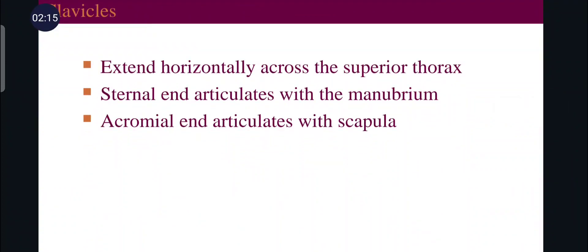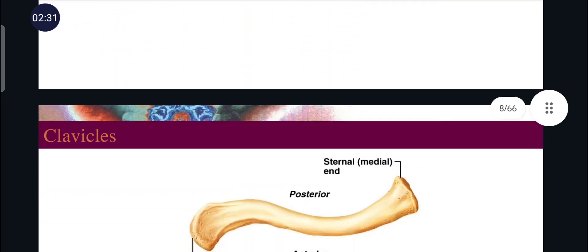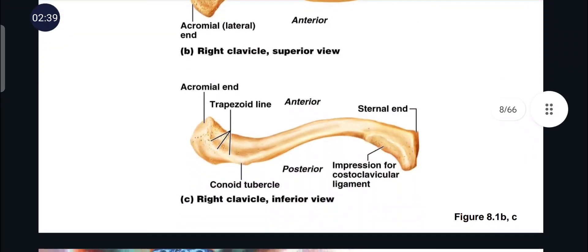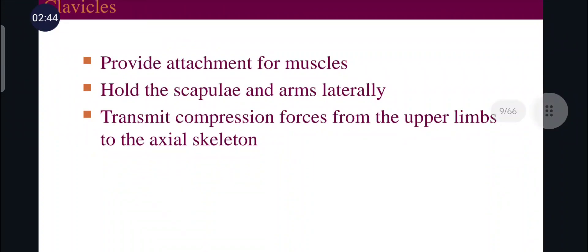Clavicles, also known as collar bones, extend horizontally across the superior thorax. The sternal end articulates with the manubrium forming the sternoclavicular joint, and the acromial end articulates with the scapula forming the acromioclavicular joint. The clavicle is S-shaped with a sternal end and an acromial end. Clavicles provide attachment to the muscles, hold the scapula and arm laterally, and transmit compression forces from the upper limbs to the axial skeleton.